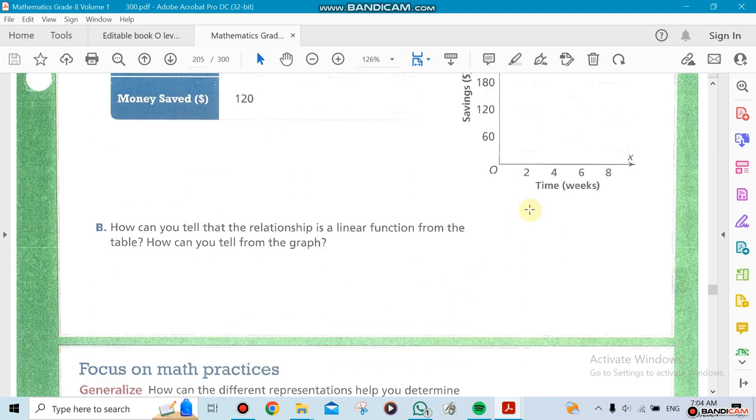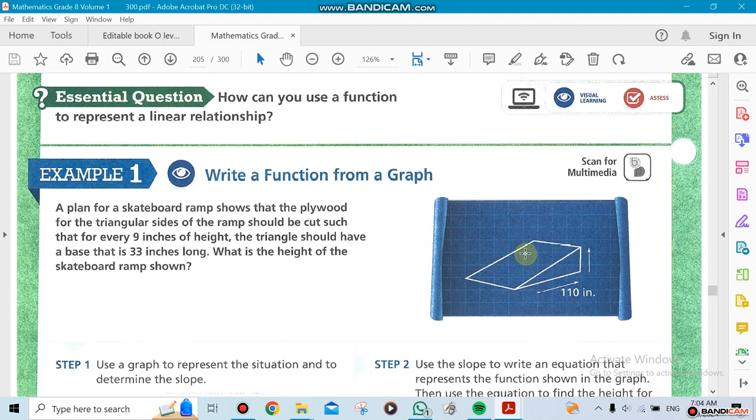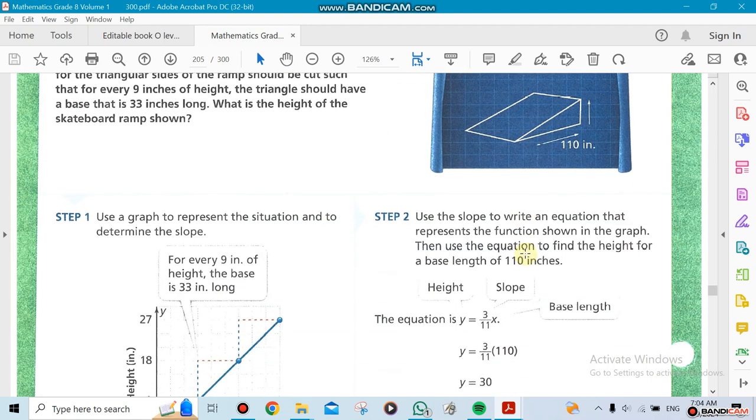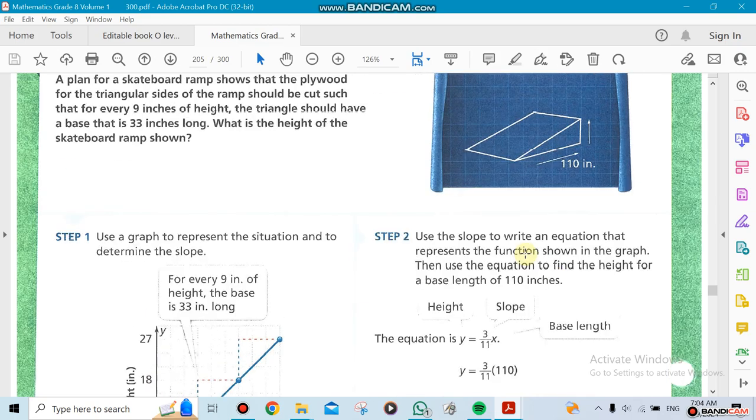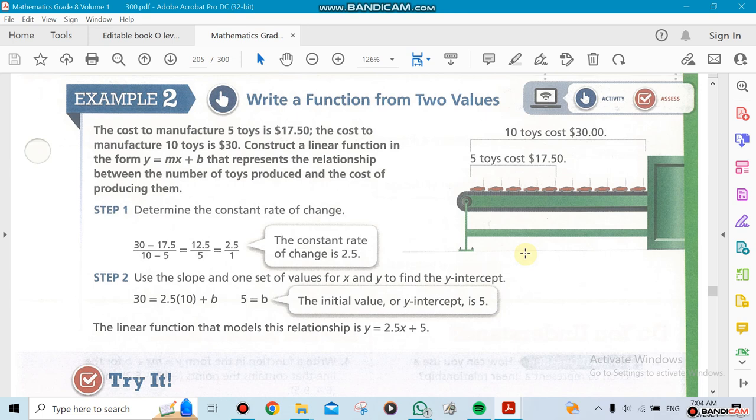And we could use it as a graph so we could explain more the situation that we are in. And also anytime you're gonna see something like this in this section, it's gonna be an actual example of real life. Here, for example, they're making every five toys cost 17.5, and then ten toys will cost 30.